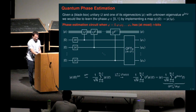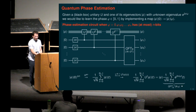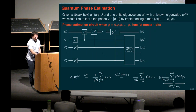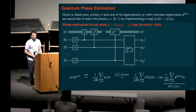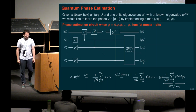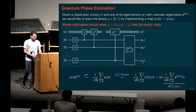Remember phi was an n-bit integer number. If you multiply by 2 to the n, you get an integer, and that's exactly a column of the Fourier transform. So if we apply QFT inverse on the QFT state, we just get that integer — phi 1, phi 2, and so on, phi n. This is how phase estimation works if your phase was actually an n-bit binary number.